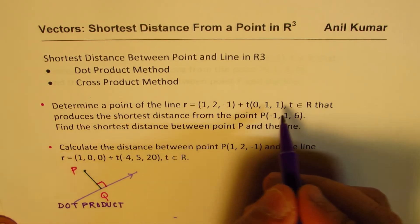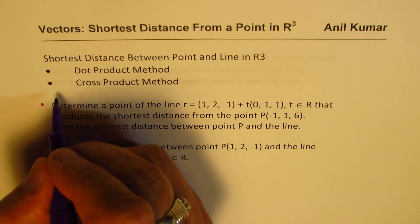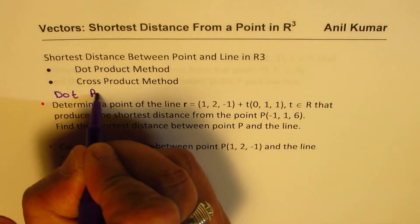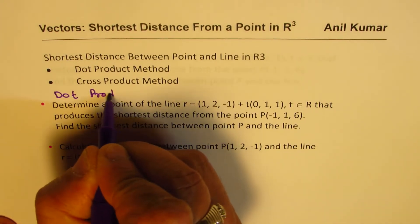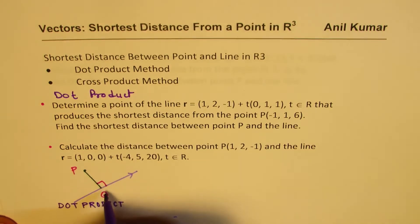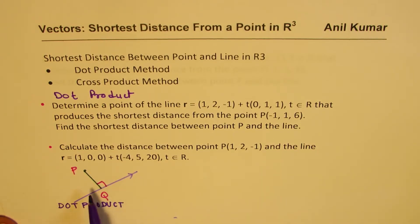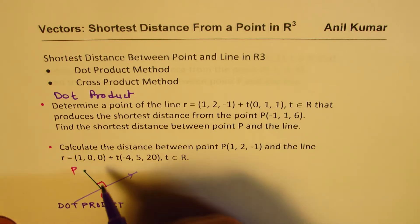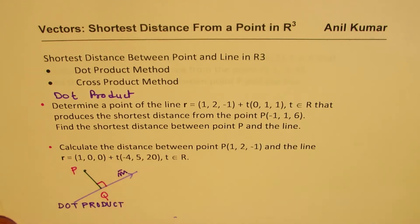So the first example will be solved using the dot product. We need to find a point, so the dot product should be 0 between vector PP0 and the direction M of the given line.